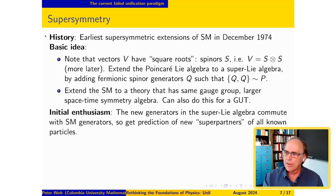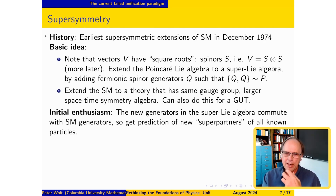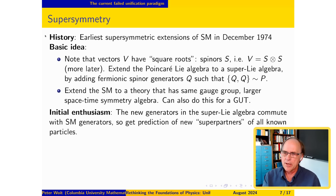There was a lot of enthusiasm about this, driven partly by the beauty of the idea. If you try to do this, you find that the Q's commute with all of the U(1), SU(2), and SU(3) generators. So what a Q does is take any particle you know about with certain charges and turn it into a superpartner — a different kind of particle with exactly the same standard model charges but with spin differing by one-half, because it has a spinor nature.